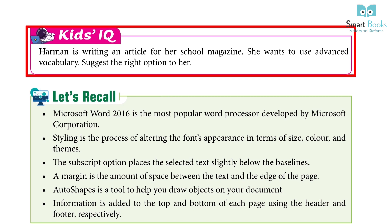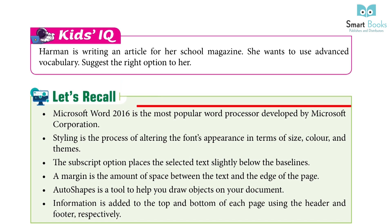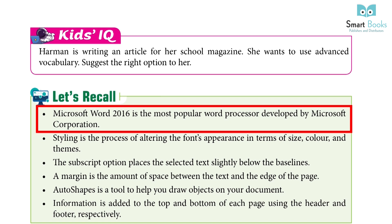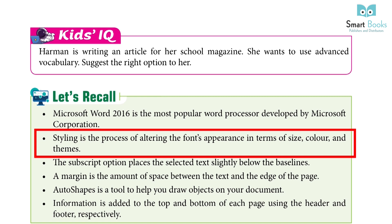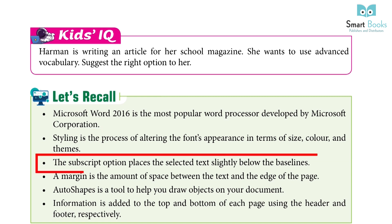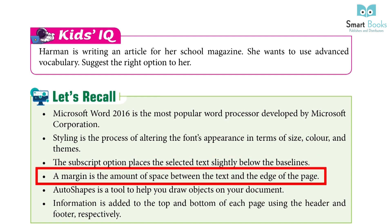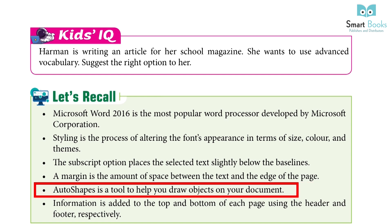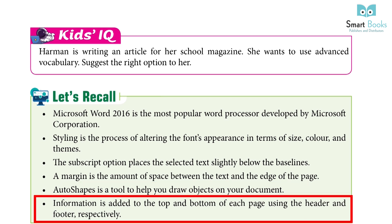Hermione is writing an article for her school magazine and wants to use advanced vocabulary — let's suggest the right option. Let's Recall: Microsoft Word 2016 is the most popular word processor developed by Microsoft Corporation. Styling is the process of altering the font's appearance in terms of size, color and themes. The subscript option places the selected text slightly below the baseline. A margin is the amount of space between the text and the edge of the page. Auto shape is a tool to help you draw objects on your document. Information is added to the top and bottom of each page using the header and footer respectively.